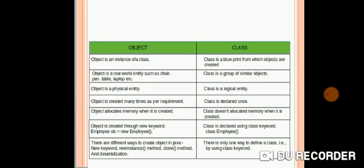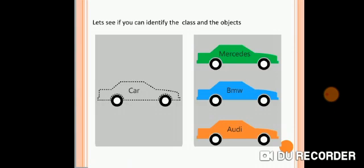An object is created through the 'new' keyword — for example: Employee ob = new Employee(). A class is declared using the 'class' keyword, followed by the class name and curly brackets containing the code. There are different ways to create objects in Java; we will be learning only the 'new' keyword for now. There is only one way to define a class, and that is by using the 'class' keyword.